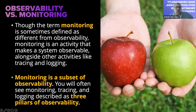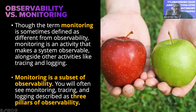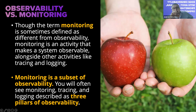A common question is: what is the difference between observability and monitoring? Monitoring is basically a subset of observability. You'll often see monitoring, tracing, and logging described as the three pillars of observability. There are other tools too, such as code profilers and AIOps. For this presentation we'll focus on monitoring, tracing, and logging.